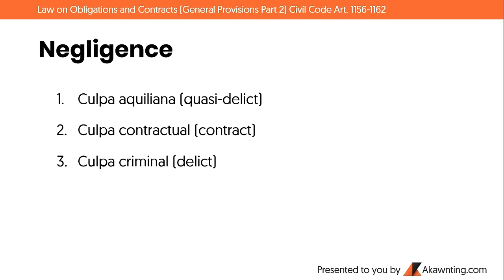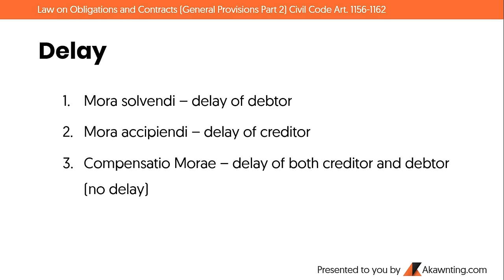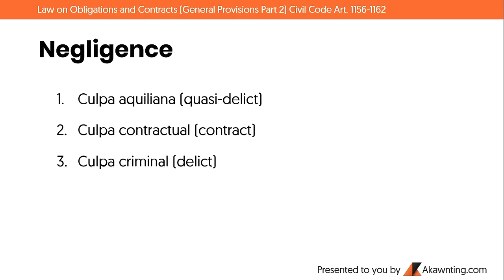Moving to negligence: unlike fraud, which is intentional, negligence involves a lack of diligence — a kind of carelessness. There are three types: culpa aquiliana, culpa contractual, and culpa criminal. Culpa aquiliana arises from a quasi-delict — for example, a vehicular accident where no one is killed but minor injuries occur due to lack of vigilance.